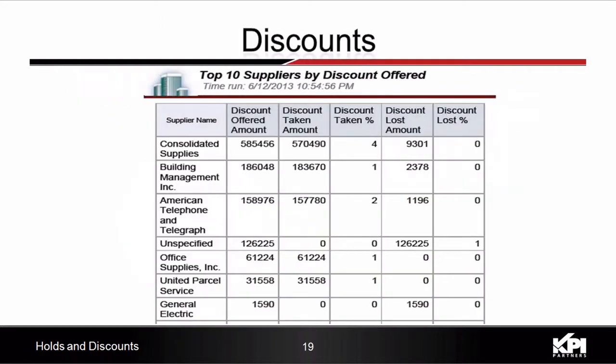Taking the maximum advantage of the discount offered by a supplier is a key parameter in any organization. By getting a deeper insight into discounts offered, discounts taken, and discounts lost, the payables department will be able to better manage their cash flow. Customers can now manage supplier discounts more efficiently by using out-of-the-box reports like top 10 suppliers by discounts offered.